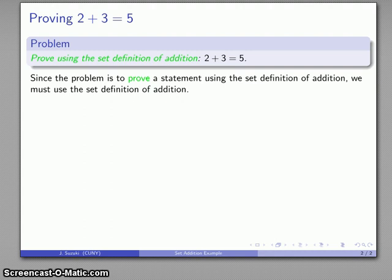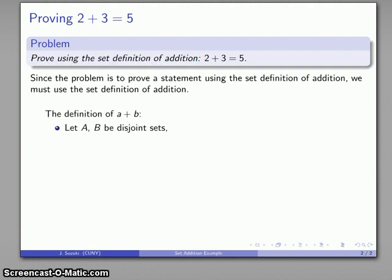And since we want to prove using the set definition of addition, we have to, or we should at least to begin with, write down what that set definition is. So the definition of A plus B according to our set definition, I have two disjoint sets, where A is the cardinality of the one, and B is the cardinality of the other. A plus B is the cardinality of the union.